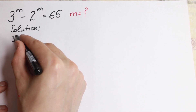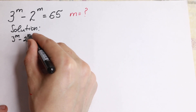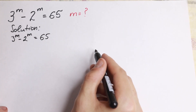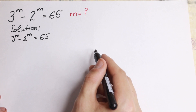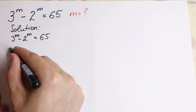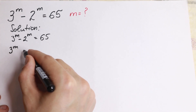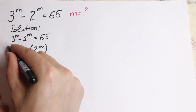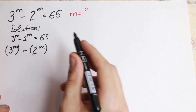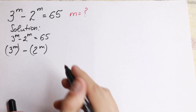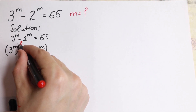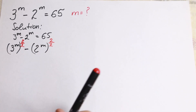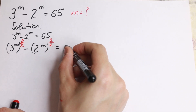So we have 3 to the m minus 2 to the m equal to 65. I want to show you a really good trick: I am going to raise 3 to the m to the power 2 over 2, and 2 to the m to the power 2 over 2, which of course still equals 65.